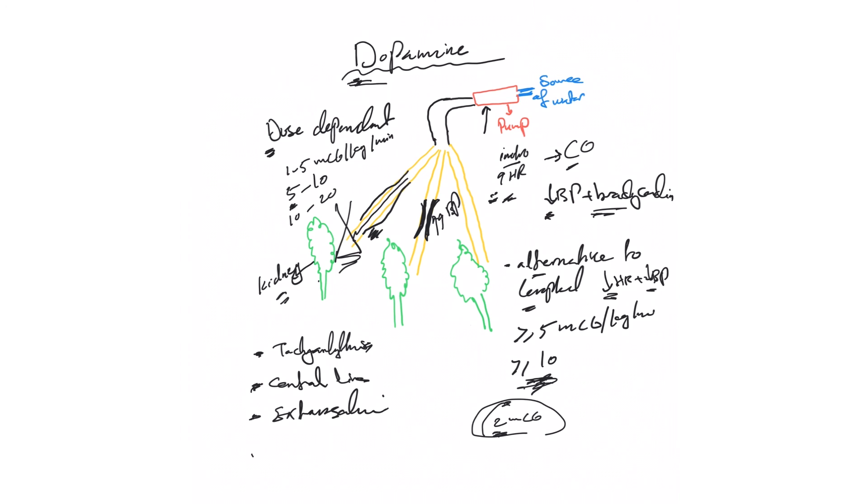When you titrate dopamine down, preferably come down but do not go beyond 5, because that's when the effect on blood pressure kind of diminishes. So if you titrate down, stop at 5 and then discontinue dopamine after that. That's the reason I brought dopamine after levophed—because again, remember, we use it when we cannot use levophed.